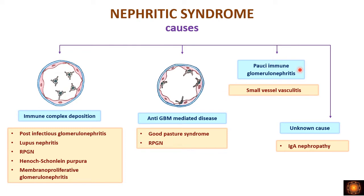Another cause is pauci-immune glomerulonephritis, where immune complexes formed are few but there is mainly small vessel vasculitis — inflammation of the vessels with inflammatory cells infiltrating the vessel wall causing damage. In small vessel vasculitis we also see nephritic syndrome. There is another condition called IgA nephropathy, where the exact cause is not fully known but aggregates of IgA antibodies are deposited in the mesangium, causing complement activation and damage.